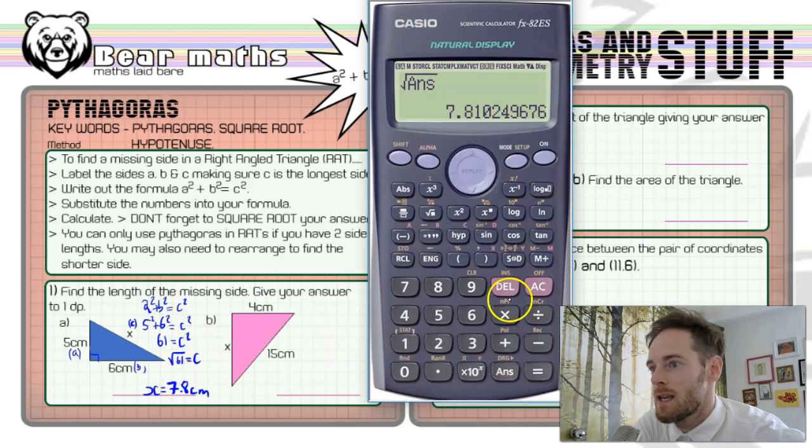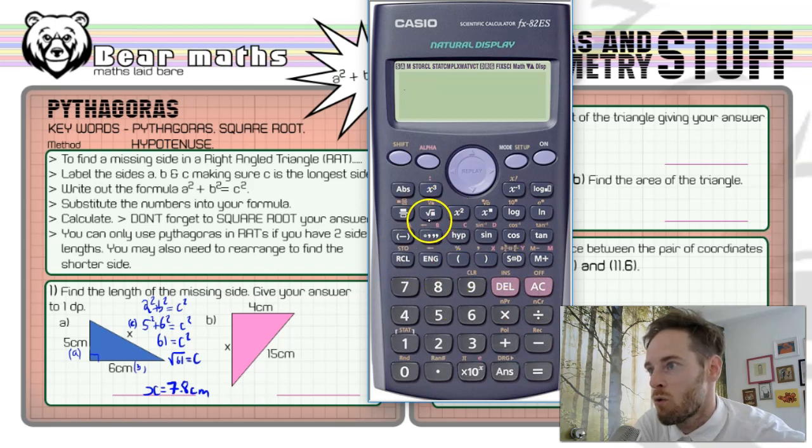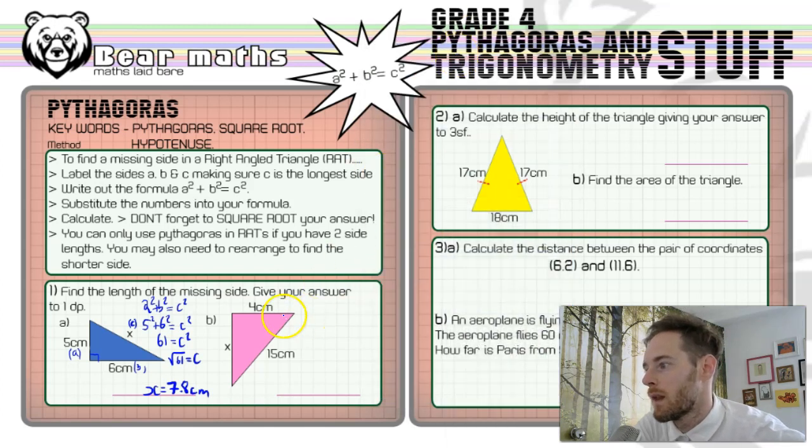Now it can get even easier. You can always do this if you're finding the longest side. You can always press the square root button straight away, do five squared plus six squared, and then press equals, and you get the square root of 61 straight away, and then you press S to D and you get 7.8 again. Now we can do this again with the shorter side, and that's what question B is. We're finding a shorter side here.